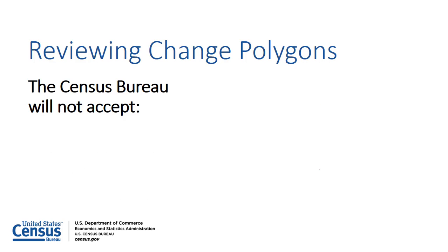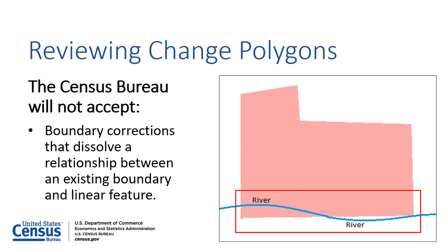The Census Bureau will also not accept boundary corrections that dissolve the current relationship between an existing boundary and a linear feature without specific instruction that the relationship is incorrect. In this example, the boundary correction dissolves the relationship between the boundary and the river. If the feature itself is wrong, the Census Bureau will take the corrections and will realign the feature or boundary to the correct location using imagery.